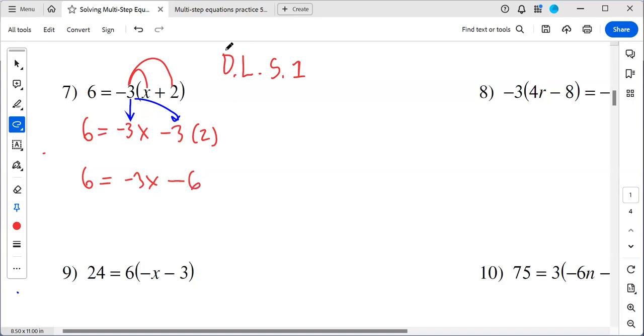So we took care of the distributive property. Next is like terms. Do I have any like terms on this side? You're right. No. This one has an X, this one doesn't. Do I have any like terms on the other side? Yeah, you're right. It doesn't because this is only one thing by itself. Next is sides. I'm going to get all the numbers on one side. I got a minus six here. If I want to move it, I got to do addition and subtraction. So that's going to be plus six here, plus six here. This cancels. Negative three X comes straight down. And then over here, we get 12.